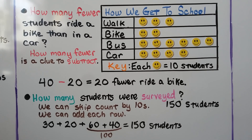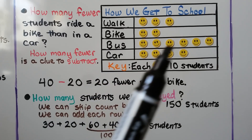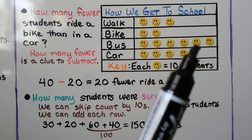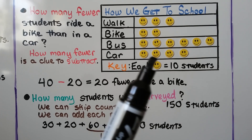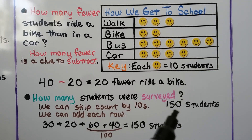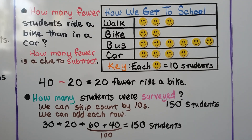How many students were surveyed? We skip count by tens and count all the smiley faces: 10, 20, 30, 40, 50, 60, 70, 80, 90, 100, 110, 120, 130, 140, 150. So 150 students were surveyed. We could also add each row: 30 plus 20 plus 60 plus 40. The 60 plus 40 makes 100, then add 30 plus 20, which equals 150 students.